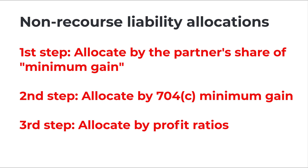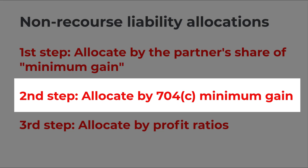This distinction becomes very important when allocating non-recourse liabilities among the partners at the end of the year. If you watched the video describing the allocation of non-recourse liabilities, I'll refer back to this video and the 704C minimum gain. If you like this video and would like to see more, feel free to subscribe.